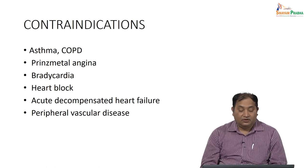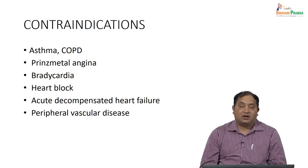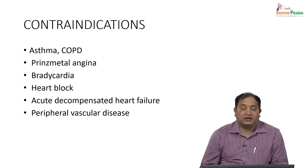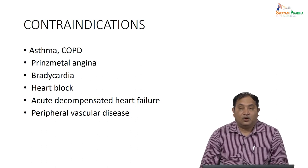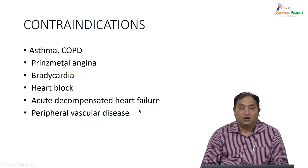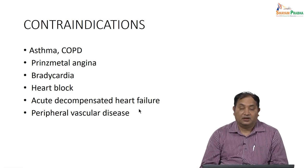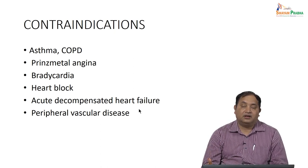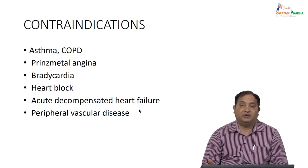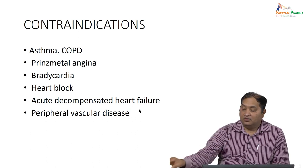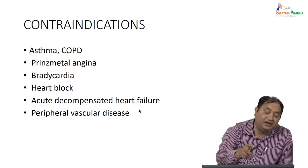Contraindications of beta blockers: they should not be given in any respiratory trouble such as bronchial asthma, chronic obstructive pulmonary disease (COPD), Prinzmetal angina, bradycardia, or heart block. In decompensated heart failure like left ventricular failure, or peripheral vascular disease like Buerger's disease, they are contraindicated. While vasodilatory beta blockers like carvedilol and bisoprolol are used in chronic heart failure, other beta blockers are contraindicated in asthma, COPD, Prinzmetal angina, bradycardia, and heart block.